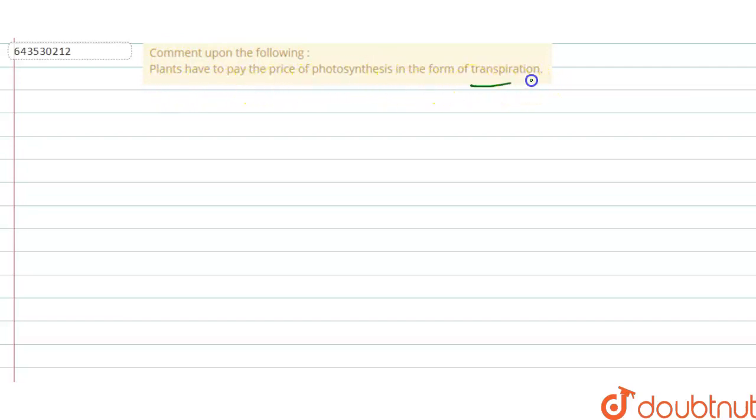So what is transpiration? Transpiration is the loss of water from the plants. Now this transpiration occurs through stomatal opening.